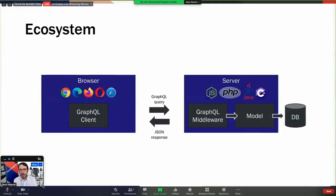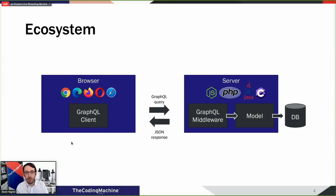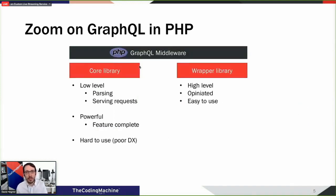So about the ecosystem. When you're doing GraphQL, you need a GraphQL client in the browser and the GraphQL middleware on the server side. There are implementations of GraphQL middleware in many languages - of course Node.js, it started there, but also PHP, Java, C#, and others. Today we're going to be zooming in on PHP.